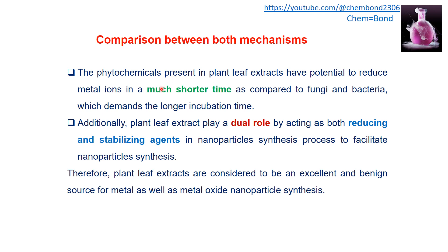The second advantage is that plant leaf extract plays a dual role: it acts as both a reducing agent and a stabilizing agent. It reduces the metal ions into corresponding reduced particles and also provides the stabilizing or capping agent. Therefore, plant extract can be more useful compared to the microorganism-based method.